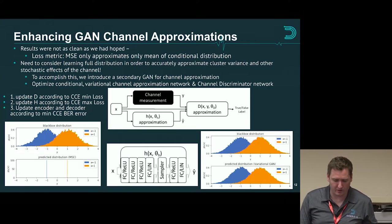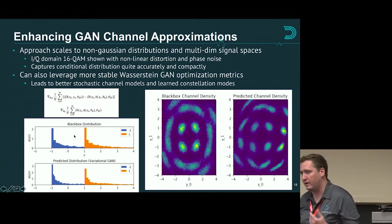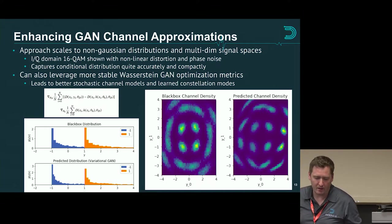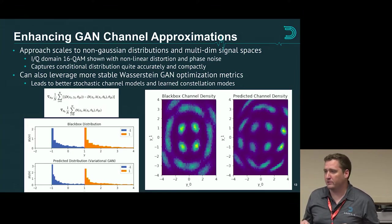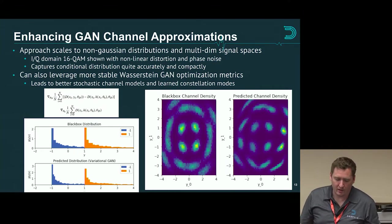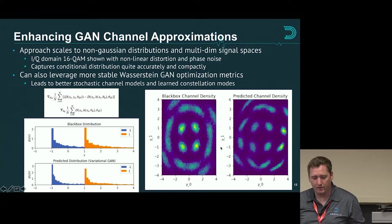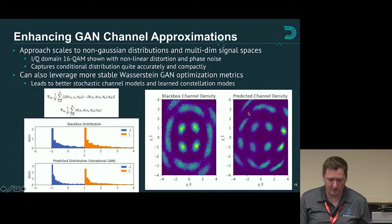This actually works pretty well — you can try it with all kinds of crazy weird channel distributions you might encounter in the world. There's a really cool paper from Andrea Goldsmith that looks at this over molecular and chemical channels, showing you can outperform Viterbi and a number of different correction methods using a learning-based approach. Here we're looking at 16-QAM over a distorted and phase noise channel, and we come up with a reasonable approximation of it to train with.